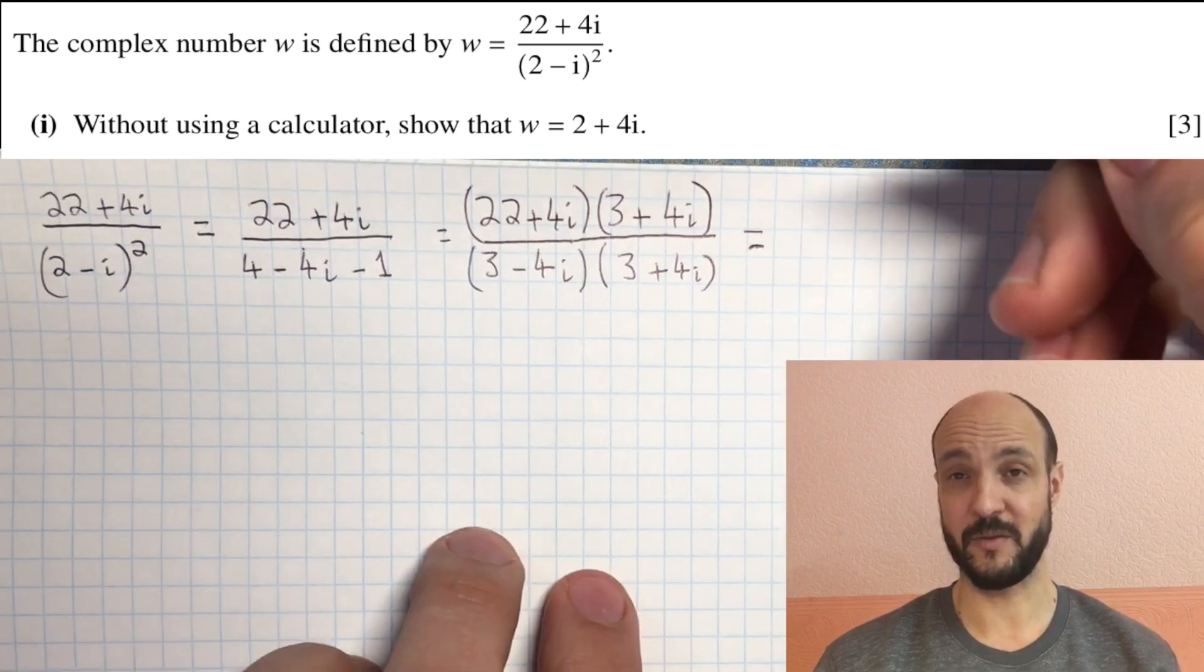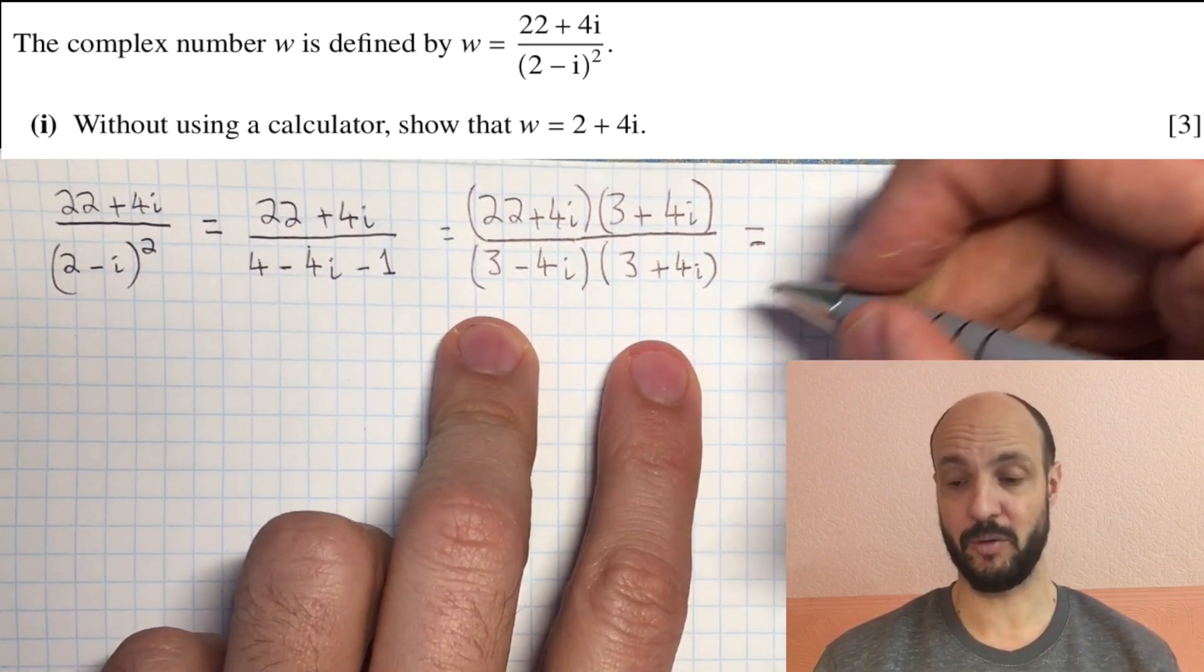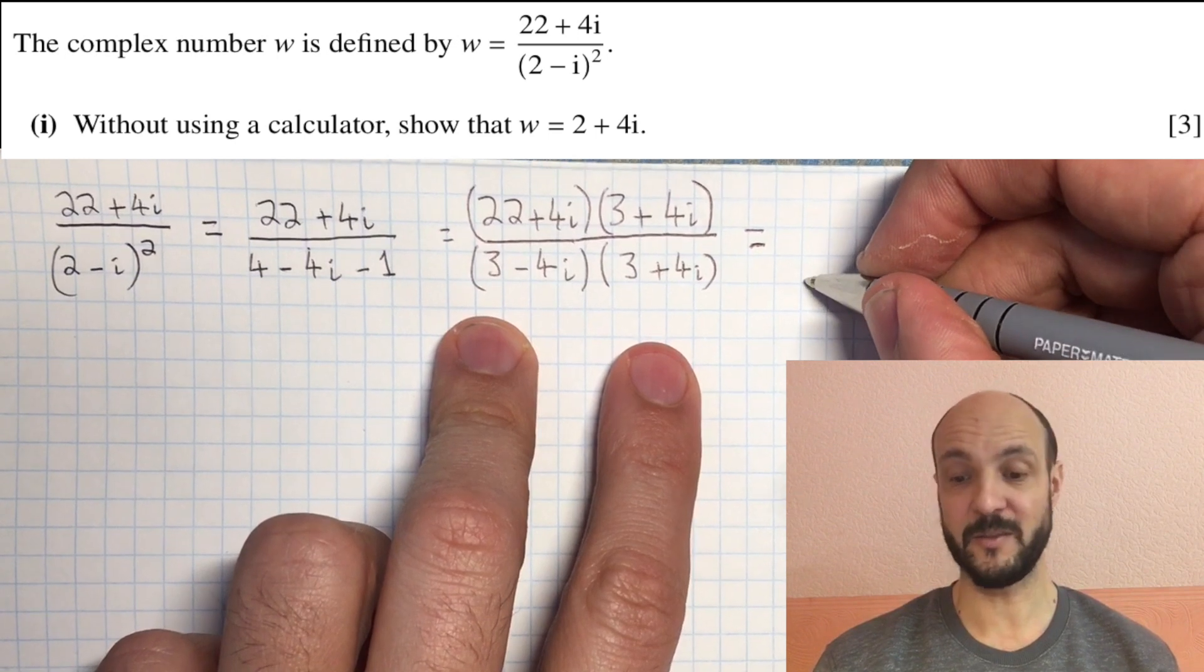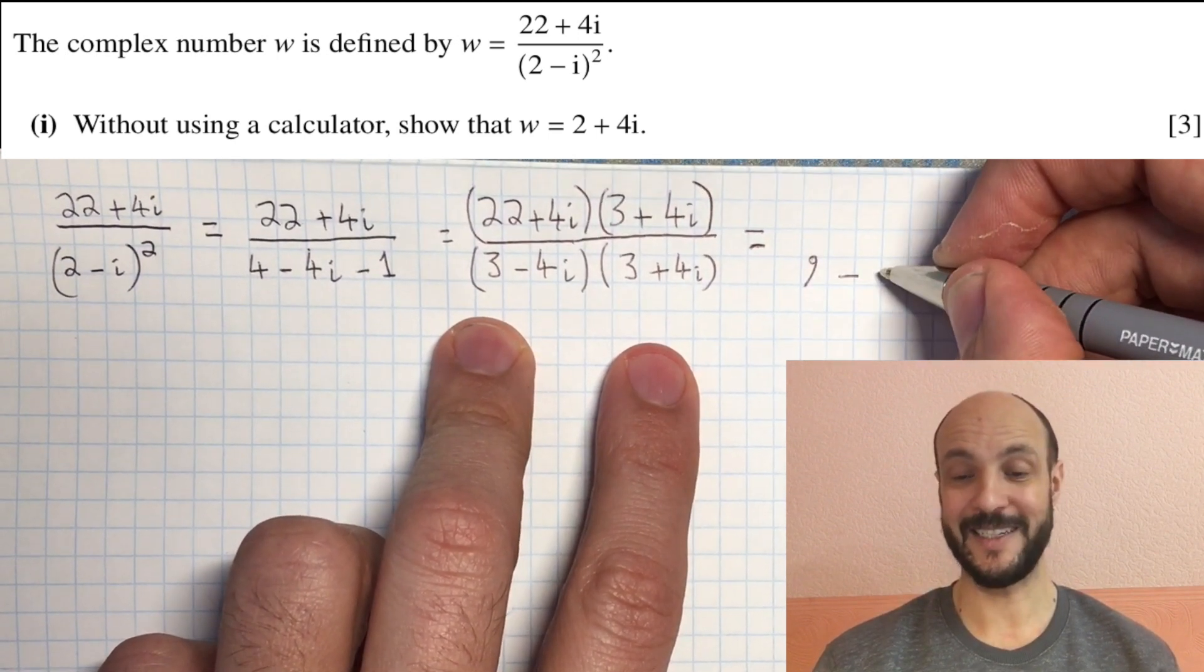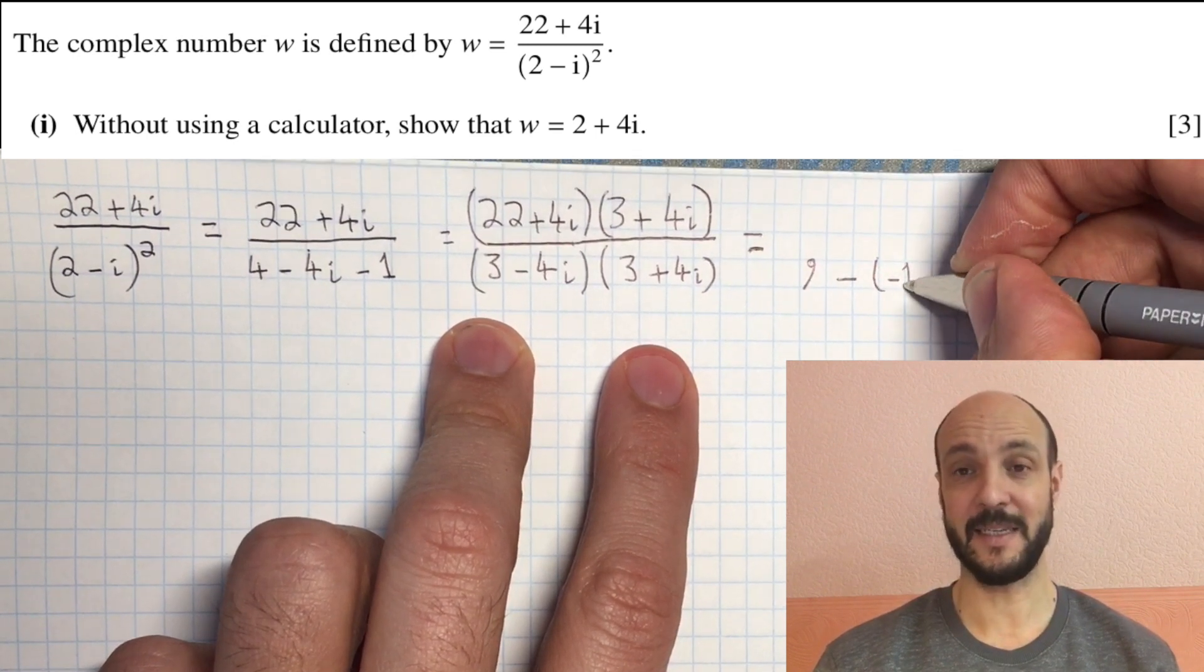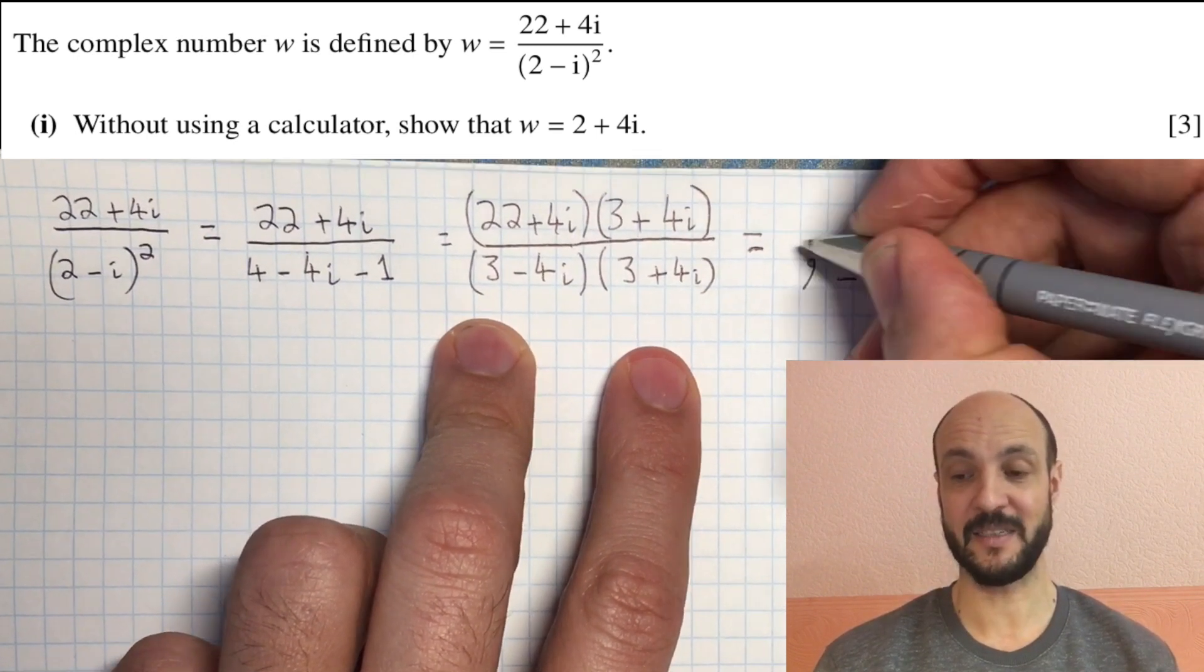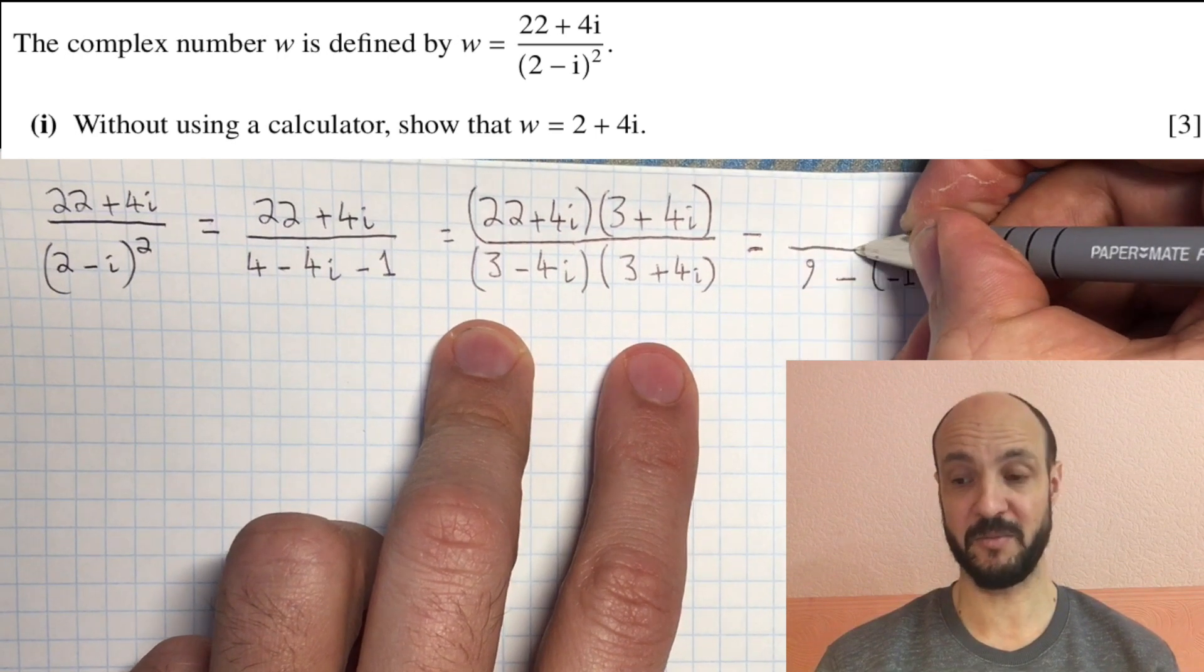Using our difference of two squares formula, 3 minus 4i times 3 plus 4i is 3 squared minus 4i squared. So that's 9 minus 16. So that's 9 plus 16. So we have 25 on the bottom of our fraction.